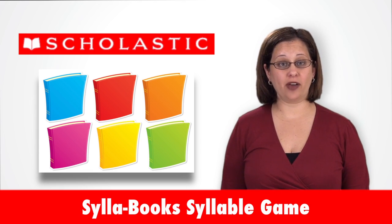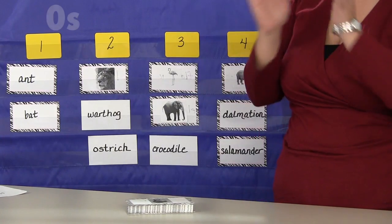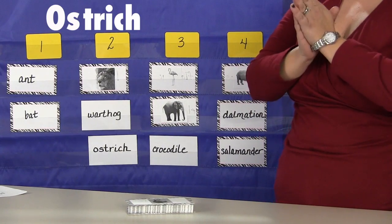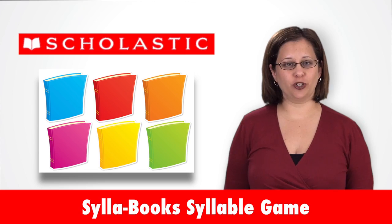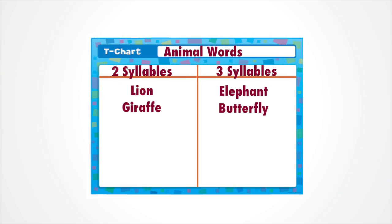Have students clap out the syllables for each word. Write words for two different syllable groups on the t-chart included in the graphic organizer's bulletin board kit.